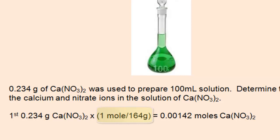So divide 0.234 grams of calcium nitrate by the molar mass, 164 grams, to get 0.00142 moles of the compound.